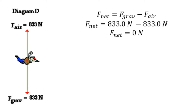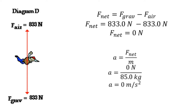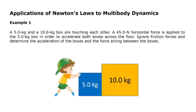For diagram D, the air resistance force equaled the magnitude of the gravity force, resulting in a net force of 0 newtons. In this case, the acceleration of the diver becomes 0 meters per second squared, which means the diver is now falling with a constant velocity. The application of Newton's Second Law of motion is not limited to single-body dynamics.